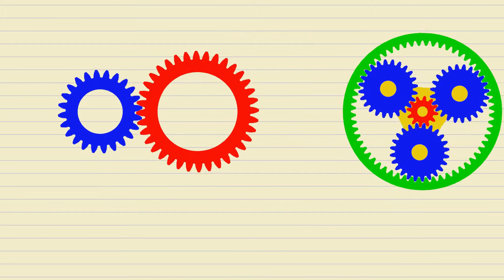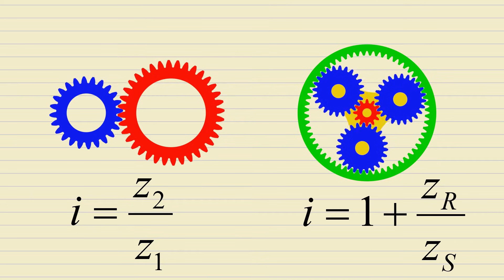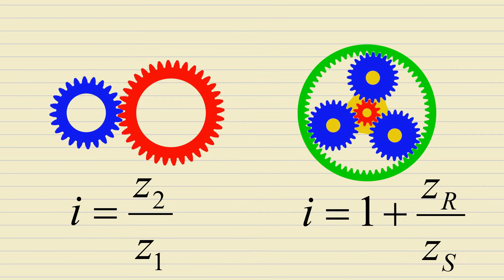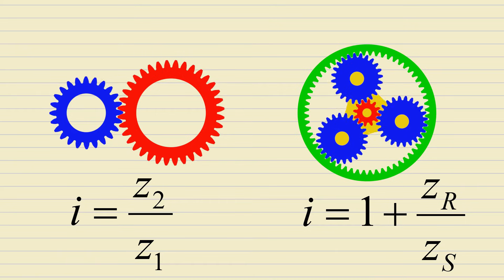The gear ratio formula for a simple gear drive is simple and intuitive, while the formula for the gear ratio of a planetary mechanism is not. In this tutorial, we will show you an original and easy-to-understand approach to deriving this formula.